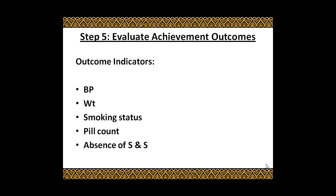Step five is evaluation and achievement of the outcome. You need outcome indicators. For this patient, the indicators are: blood pressure, weight, smoking status, pill count, and the absence of the signs and symptoms described by the patient. At the next appointment in the ambulatory care clinic, you check the patient's blood pressure, weight, smoking status, and any remaining number of pills the patient still has. Thank you and good luck.